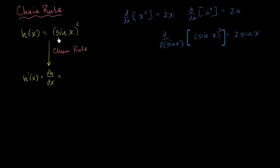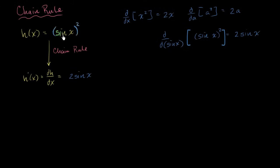The chain rule tells us that this derivative is going to be the derivative of the outer function — x squared — with respect to sine of x. So that's going to be 2 sine of x. We can view it as the derivative of the outer function with respect to the inner: 2 sine of x — treating sine of x like it's an x, giving us 2 sine of x — times the derivative of sine of x with respect to x.